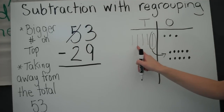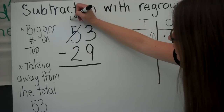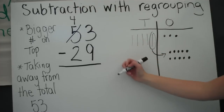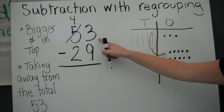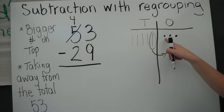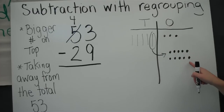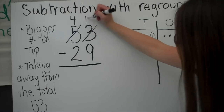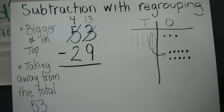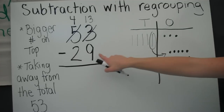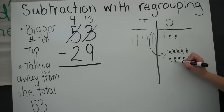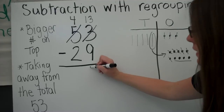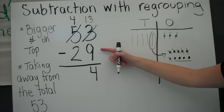I'm going to get rid of that five and now I have four tens left. I no longer have three ones — I have three plus ten more, so I have thirteen ones. Now I can subtract. I'm going to take away nine and cross them off: one, two, three, four, five, six, seven, eight, nine. I have four ones left, and I know that thirteen minus nine is four.